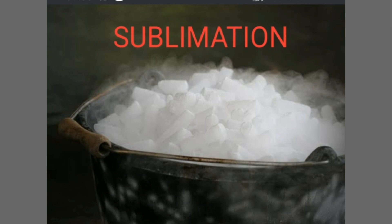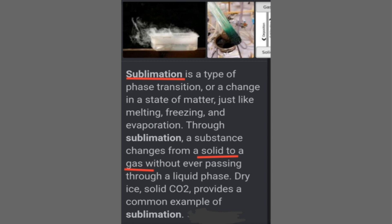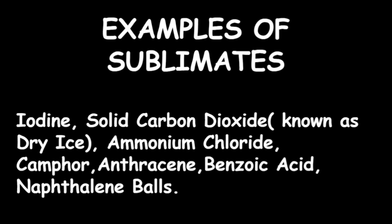What is sublimation? Sublimation is the change of state from solid to gas — there is no liquid state involved. The solid does not melt into liquid first; here the solid directly changes into its gaseous state. Sublimation is a type of phase transition, just like melting, freezing and evaporation. Through sublimation, a substance changes from a solid to a gas without ever passing through a liquid phase. Dry ice, i.e. solid carbon dioxide, provides a common example of sublimation. Other examples of sublimates include iodine, ammonium chloride, camphor, anthracene, benzoic acid, naphthalene balls, etc.